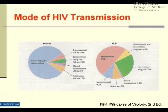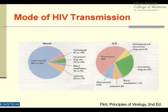Regarding mode of HIV transmission, what's most striking is the difference between the United States and the world. In the United States, about half of HIV transmission is through homosexual acts and only about 10% through heterosexual transmission. In contrast, in the rest of the world, between 80% and 85% is heterosexual transmission, and only 5% to 10% through other routes. This difference is a cause of a lot of investigation.